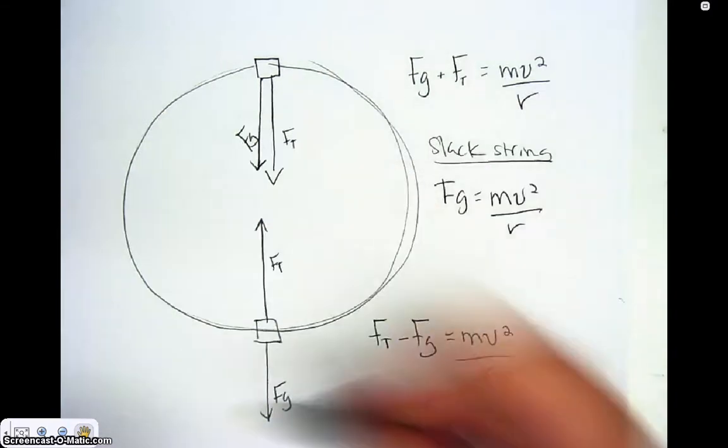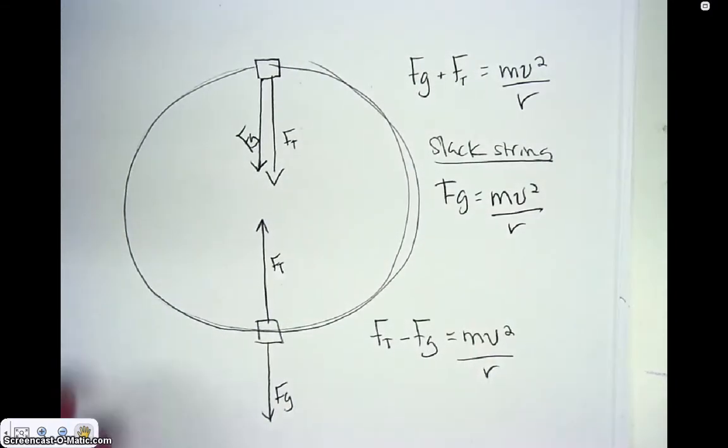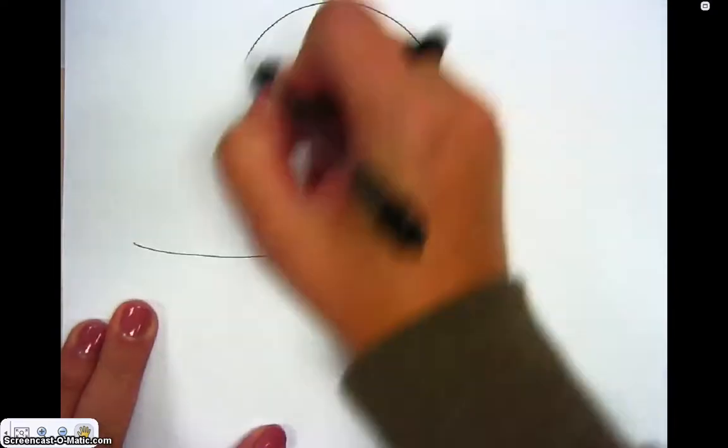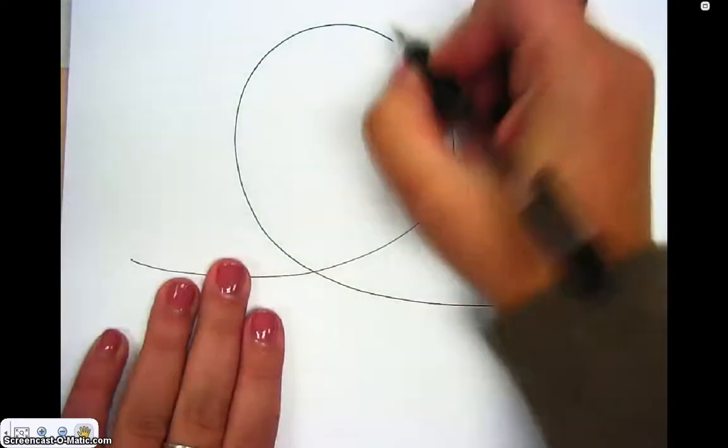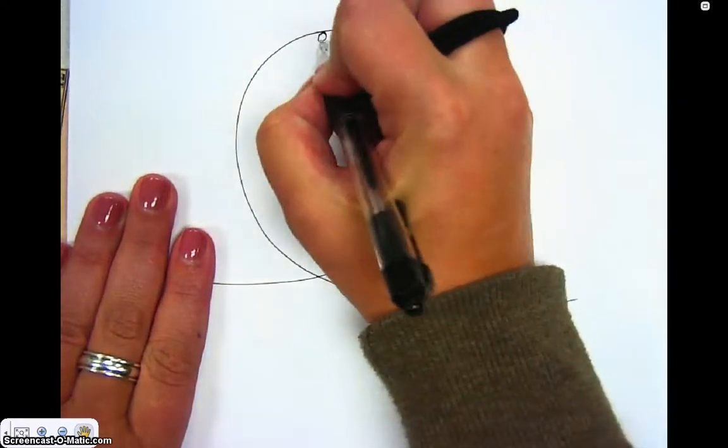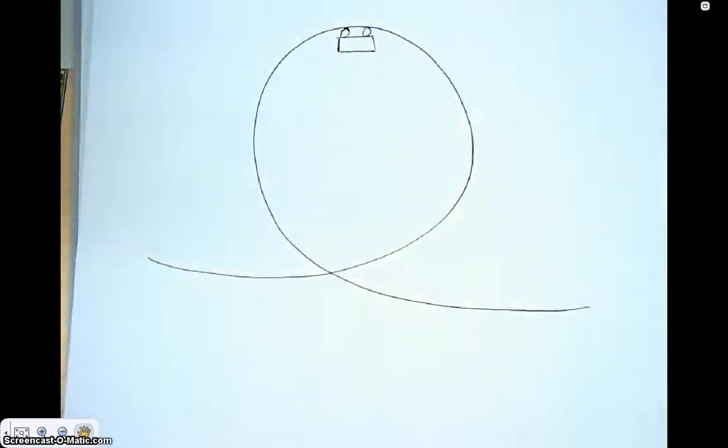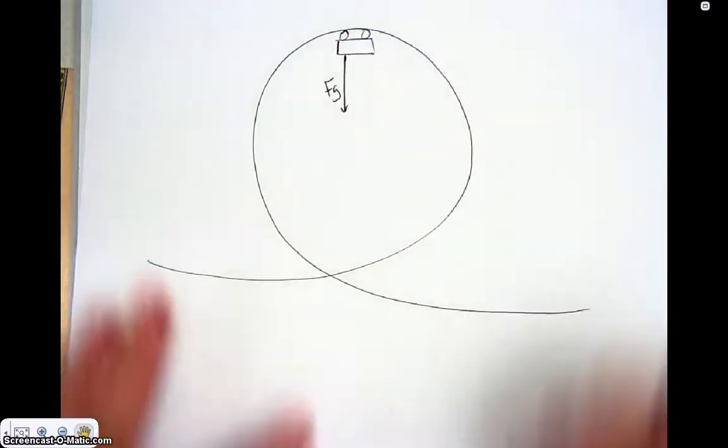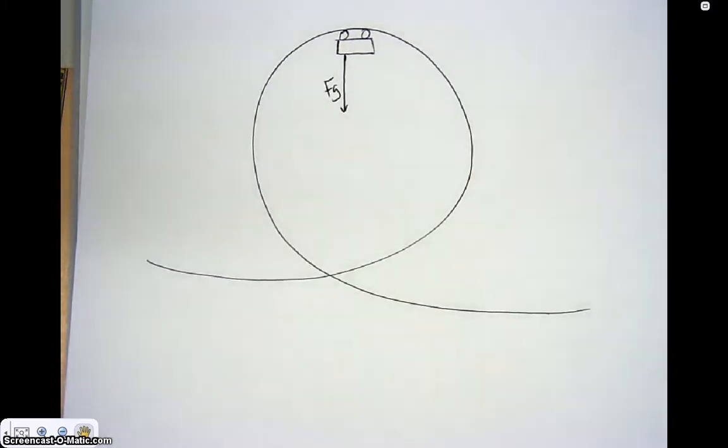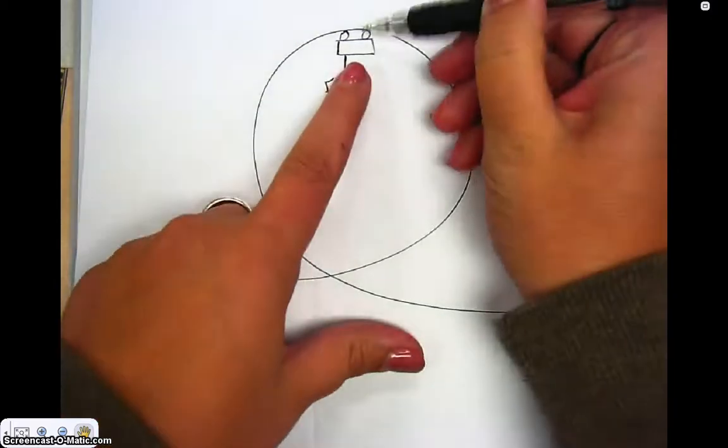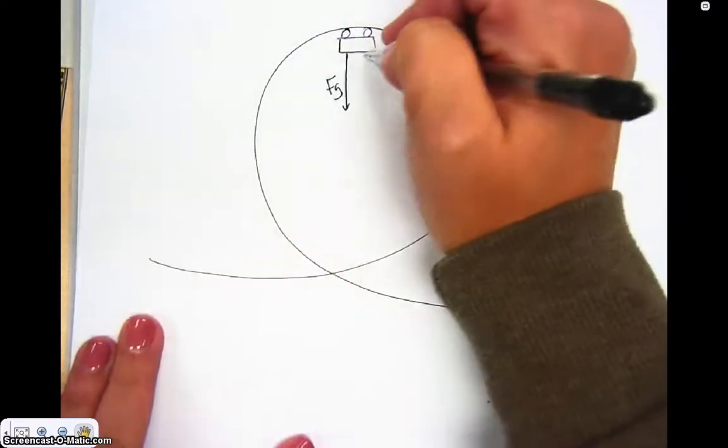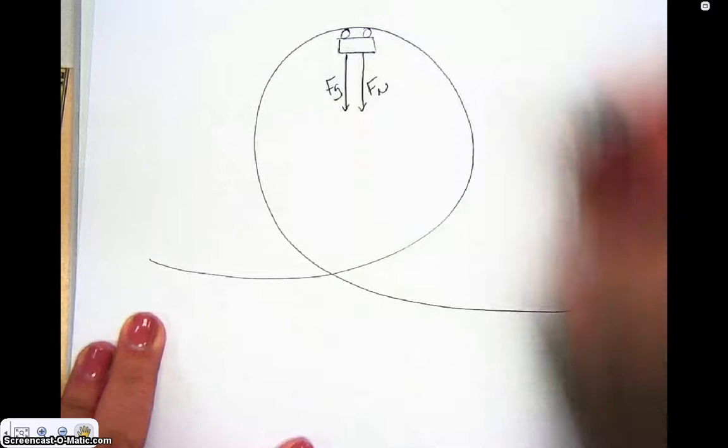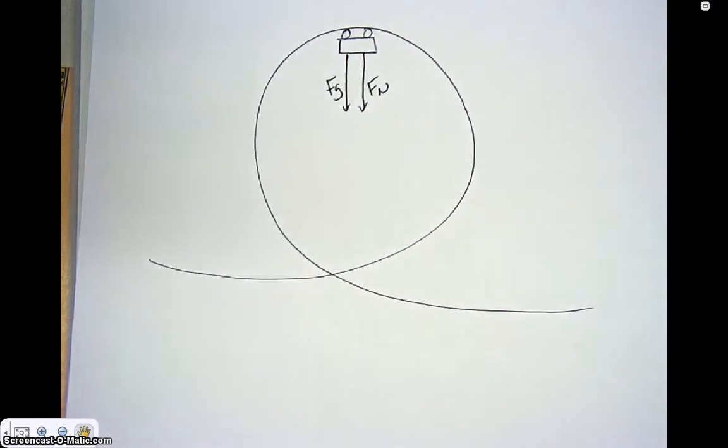Another way we can think about this is a roller coaster scenario. A lot of roller coasters have these loops. As you're going around the circle, let's say you're up here at the very top of the circle. You have a couple of things causing you to turn. We have gravity going down in this direction, and that's causing you to turn. But what else causes you to turn is that the track pushing on the tires, which is the normal force. Those are the two things that make you turn.